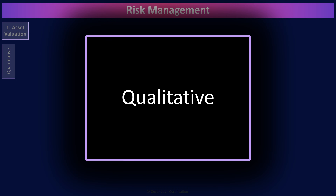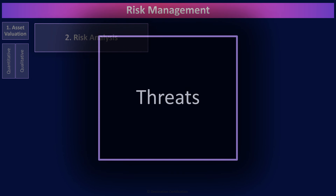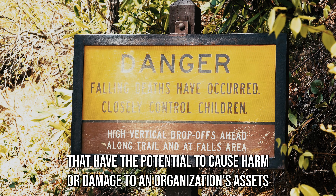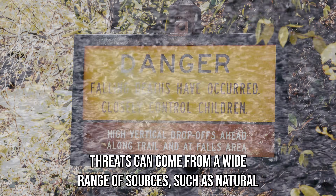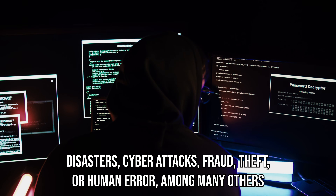Once you have completed asset valuation, you'll have a nicely ranked list of assets, and it is time to move on to step two: risk analysis. Risk analysis is where you identify the risks associated with each asset. To identify and understand those risks, you need to look at four things: threats, vulnerabilities, impact, and likelihood. Threats are any potential danger — events, situations, or actions that have the potential to cause harm or damage to an organization's assets, operations, or reputation, coming from sources such as natural disasters, cyberattacks, fraud, theft, or human error.